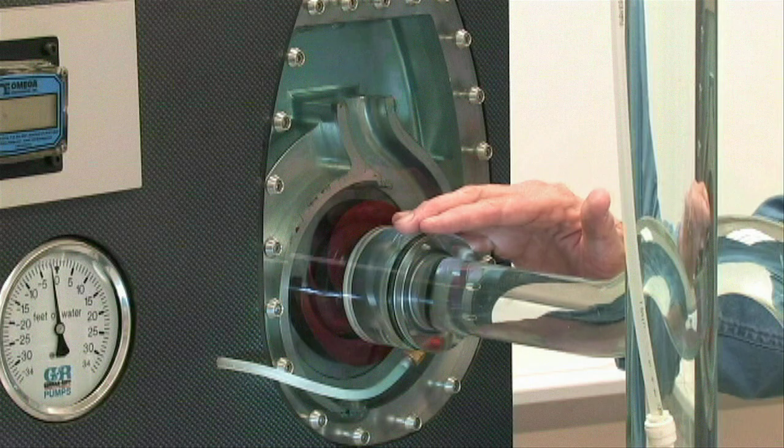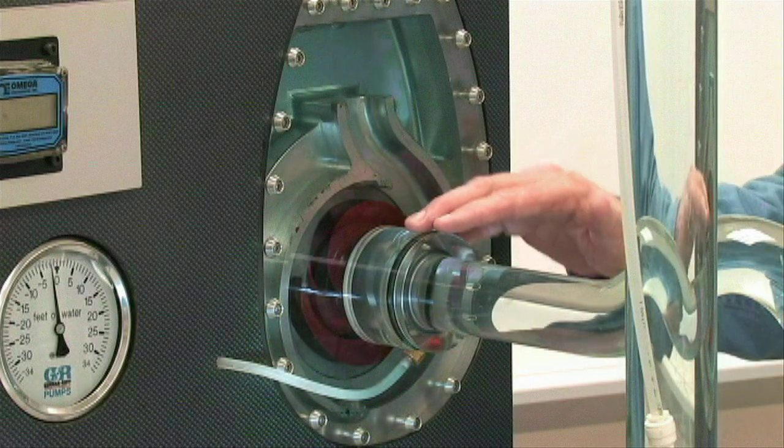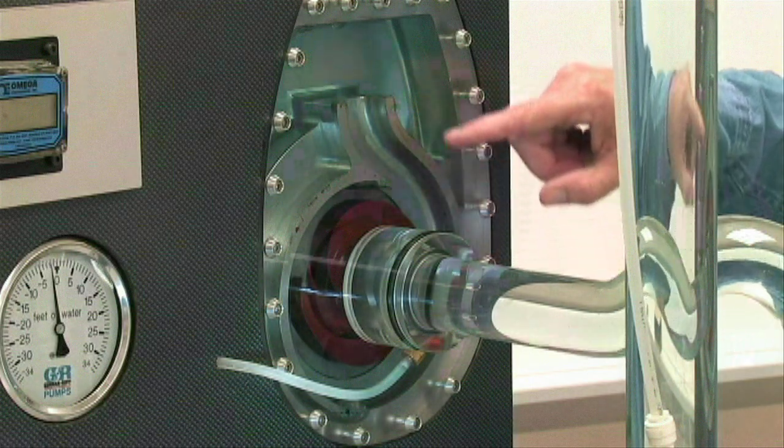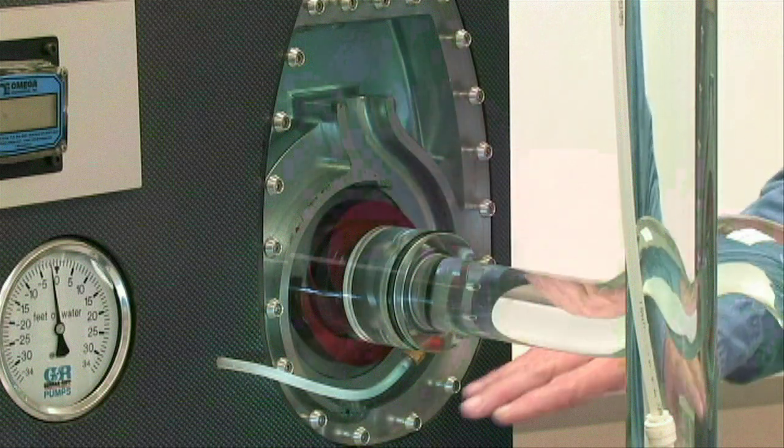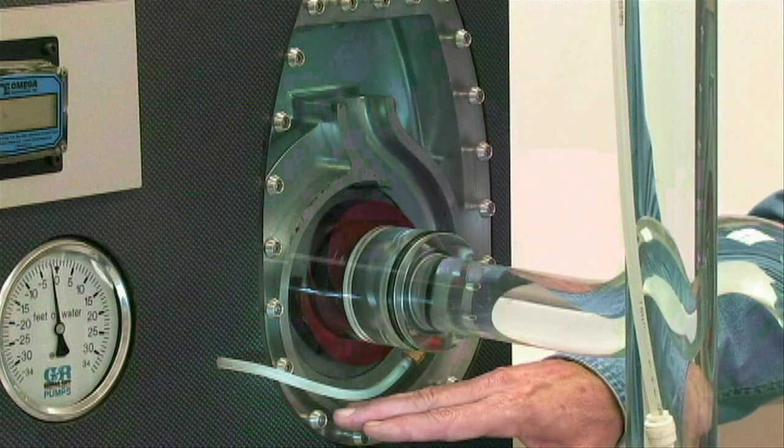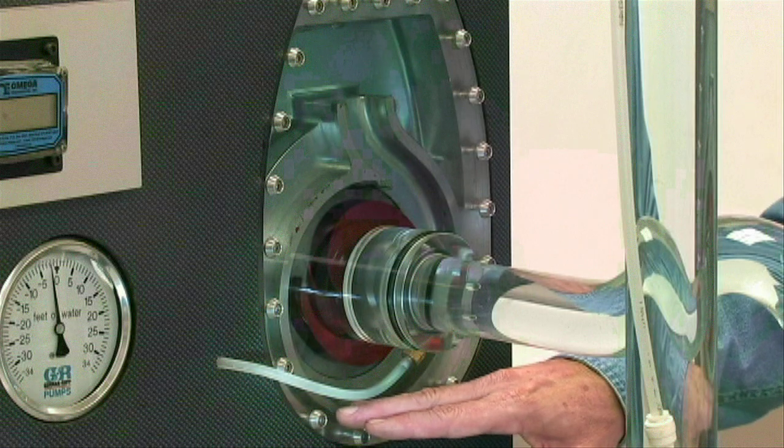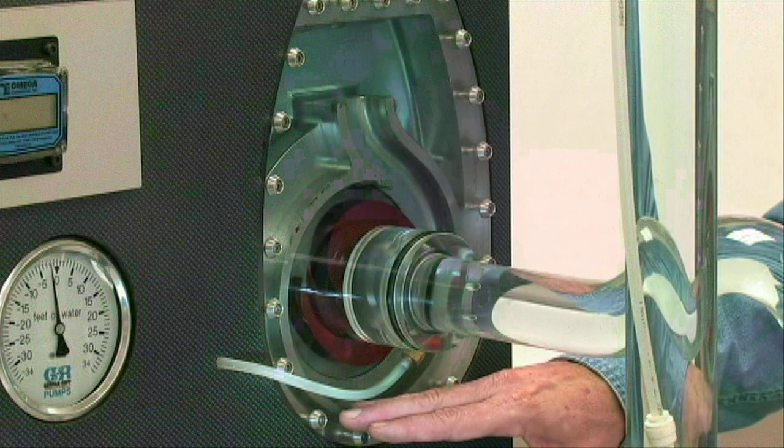And finally, recirculation. During priming, we recirculate water through the volute casing to create that low pressure at the eye. By plugging up the recirculation port, we fail to recirculate water within the casing and fail to prime.